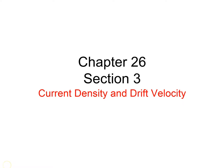We're picking up Chapter 26, covering Section 3, and we'll do a bunch of examples at the end. This section is going to cover current density and drift velocity of electrons.